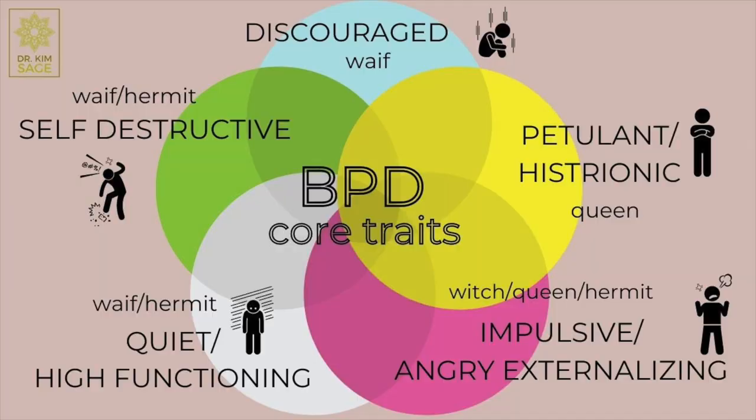Now let's discuss what I think are five subtypes. Classically there are four labels: the discouraged borderline — also often called the high-functioning or quiet borderline — but I split those apart. I think high-functioning and quiet is actually not the same as discouraged, so I'm making quiet/high-functioning my fifth one. So we have: discouraged, impulsive (also called angry externalizing), the petulant or histrionic subtype, and the self-destructive (also known as the depressive internalizing). Let's go through what those are.